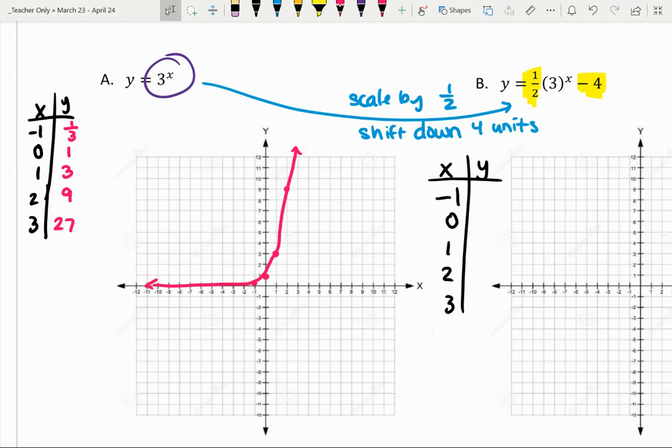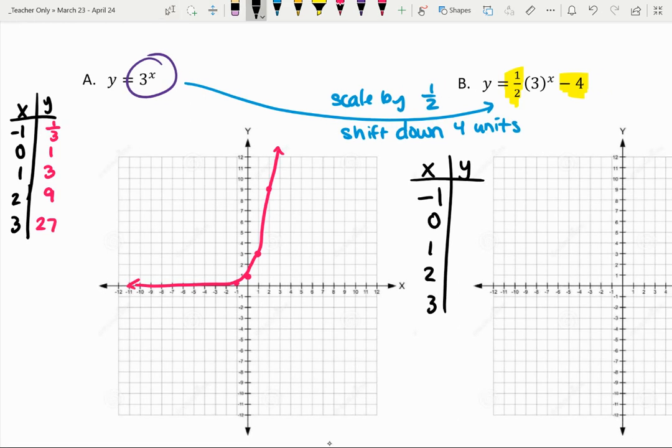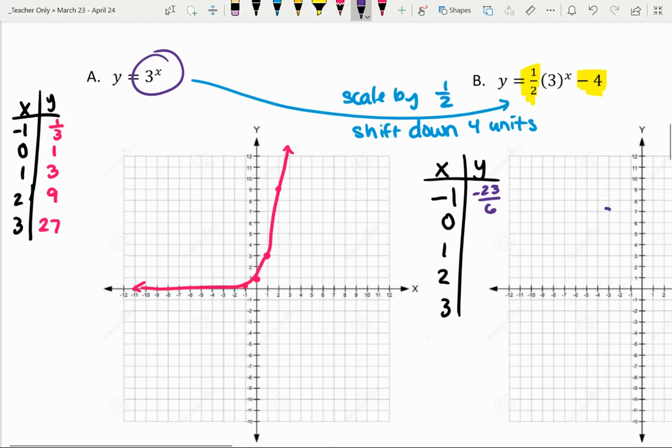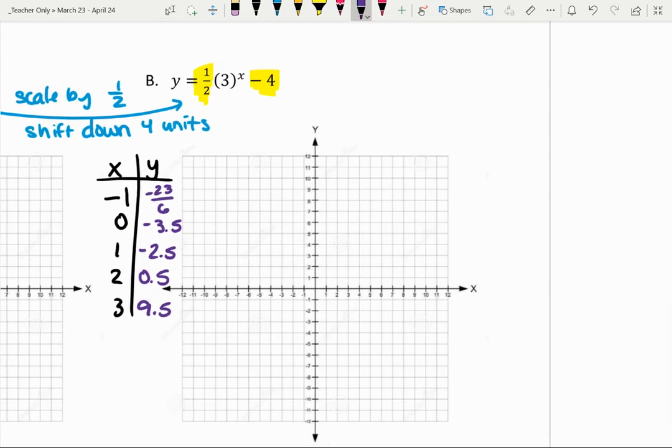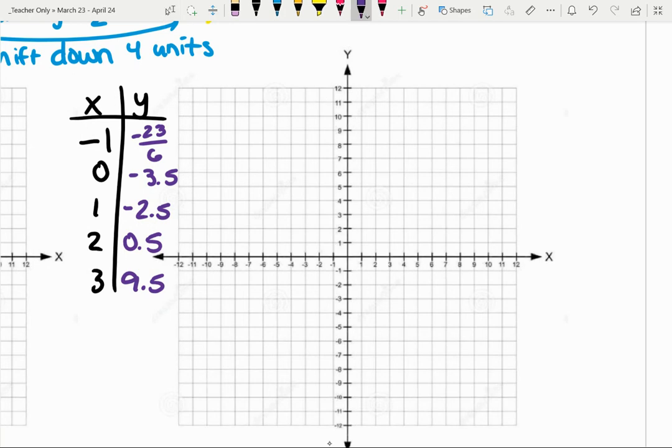So if I look at some of these values here, 1/3, and then that's 1/6 minus 4 is negative 23/6. So maybe that's not going to be the most helpful point. If I'm using to the power of 0, that's 1 times 1/2. That's 1/2 minus 4 is negative 3.5. 3 to the power of 1 is 3 times 1/2 is 1.5 minus 4 is negative 2.5. And then let's see, I've got 9 times 1/2 is 4.5 minus 4 is 0.5. And then finally, 27 times 1/2 is 13.5 minus 4 is 9.5. So this graph will look just a hair different and that's okay. Again, whatever it really takes to make it happen is no big deal.